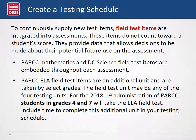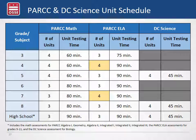When creating your test schedule, take into account the number of units and the time each unit takes. For field test items, the math and DC Science assessments have items embedded so there are no changes in units or time. However, the Park ELA field test is an additional unit taken by select grades — for 2019, grades 4 and 7 will have an additional fourth unit of ELA. The test schedule provides details on time and number of units per grade, as these vary by assessment and grade level.